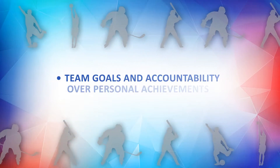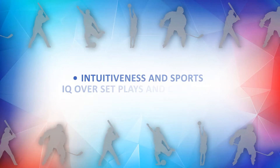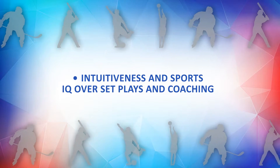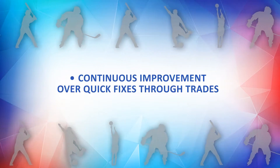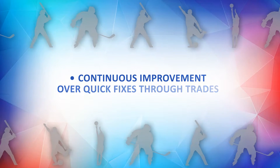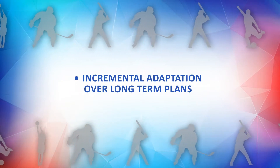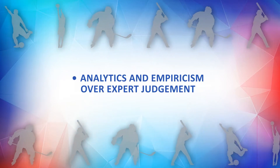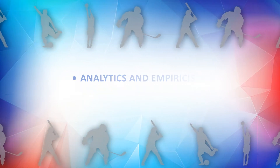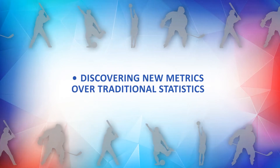Through the Agile Sports Framework, teams will come to value: team goals and accountability over personal achievements; intuitiveness and sports IQ over set plays and coaching; continuous improvement over quick fixes through trades; incremental adaptation over long-term plans; analytics and empiricism over expert judgment; and discovering new metrics over traditional statistics.